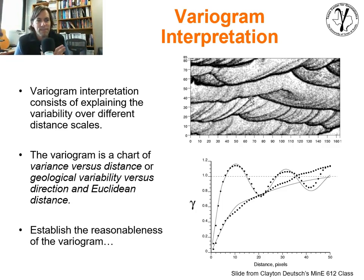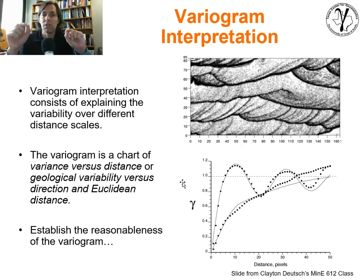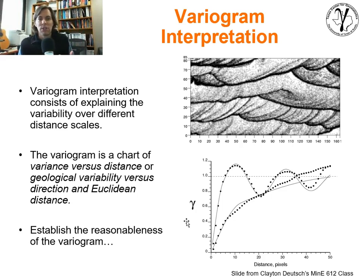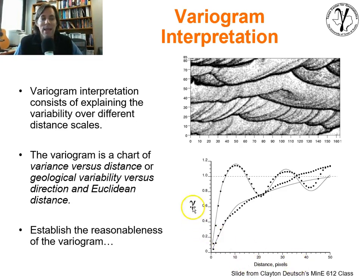The variogram model measures change — specifically, the average squared difference of pairs separated by a lag distance, versus distance. Geologically speaking, the way rock changes is often interpreted as geologic distance, whereas the variogram uses plain Euclidean distance. The variogram is a function that helps us go between Euclidean distance and geologic distance.